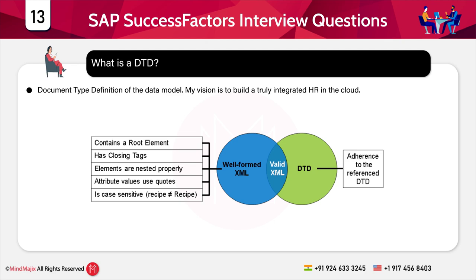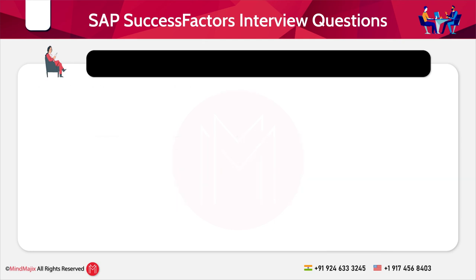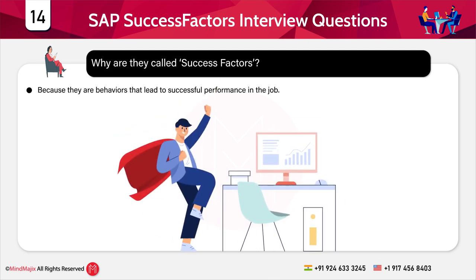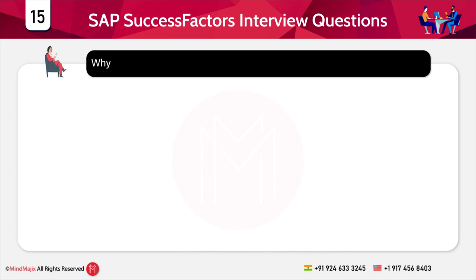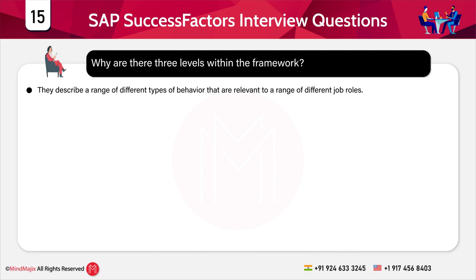The next important question is: why are they called success factors? They are called success factors because they are the behaviors that lead to successful performance in the job. The next question is: why are there three levels within the framework? The three levels describe a range of different types of behavior relevant to different job roles; however, the levels within the framework are not hierarchical.